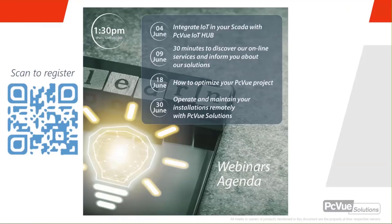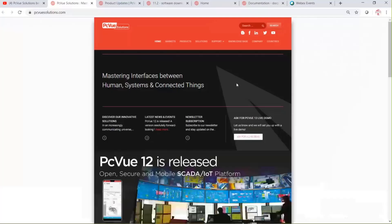If you want to access the local hotline according to your location, you can find it on our website — you'll find all the hotline addresses for our different subsidiaries located all over the world, in China, the US, and Europe. On the main corporate website, there's also a form you can fill out and we will receive your question or issue description.